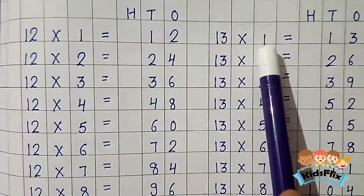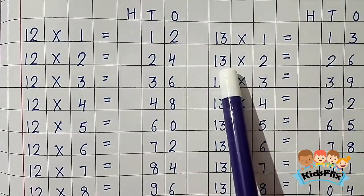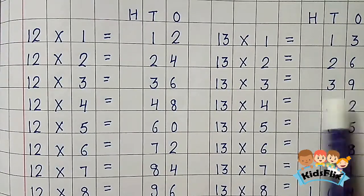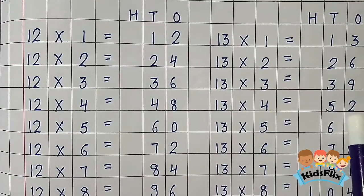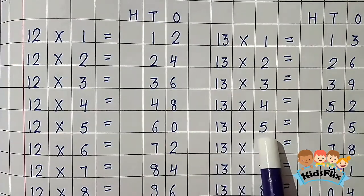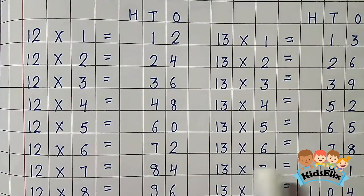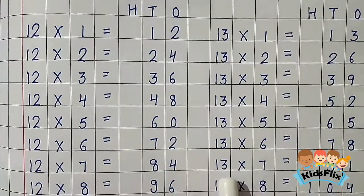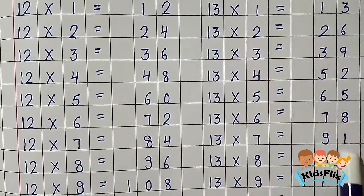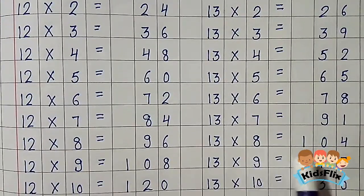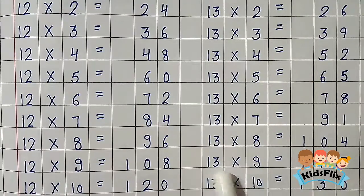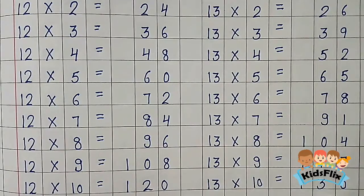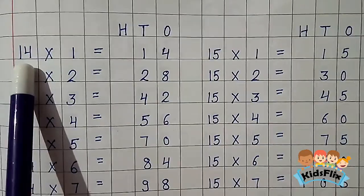13 1s are 13. 13 2s are 26. 13 3s are 39. 13 4s are 52. 13 5s are 65. 13 6s are 78. 13 7s are 91. 13 8s are 104. 13 9s are 117. 13 10s are 130. Now the table of 14.